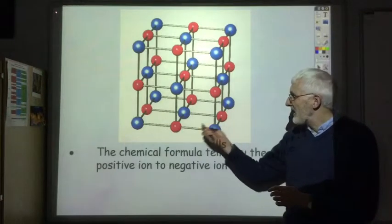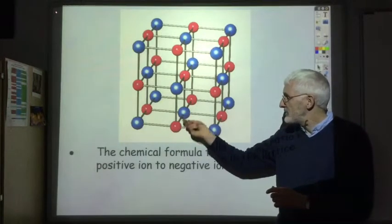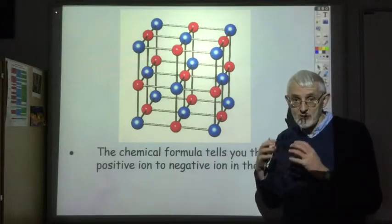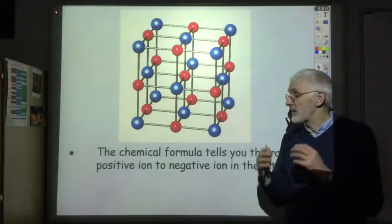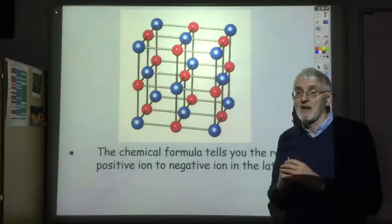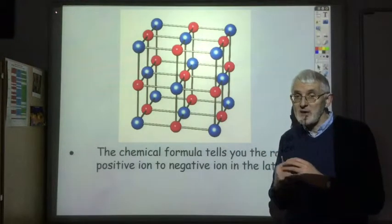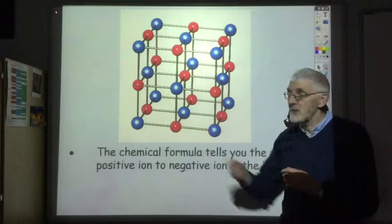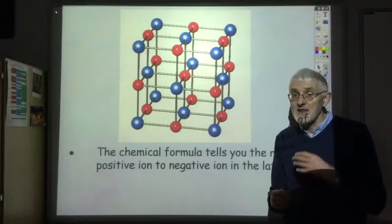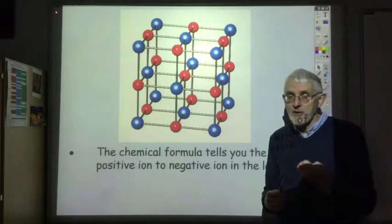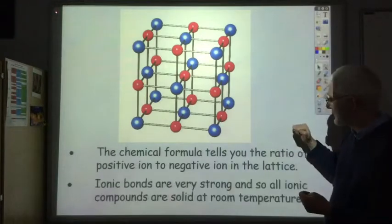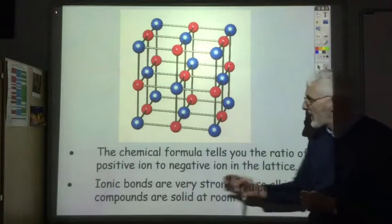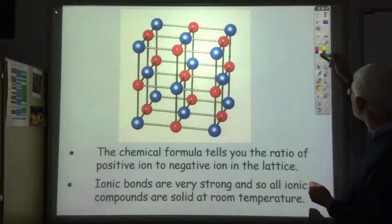The electrostatic attraction between the positive and negative ions is really quite strong, so the ions are held together strongly and are closely packed. You need to put in a lot of energy to break these ionic bonds. This means all ionic compounds are solid at room temperature. Ionic bonds are very strong, so all ionic compounds are solid at room temperature.